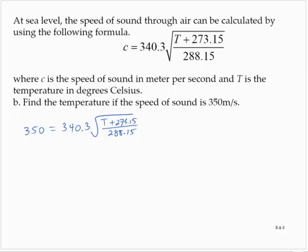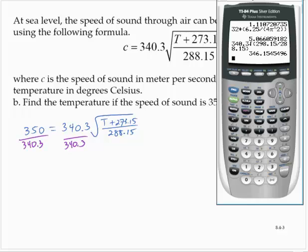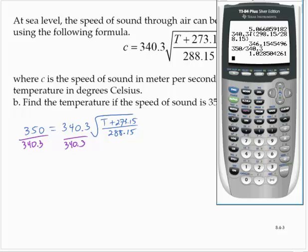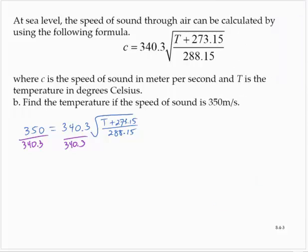First, to solve this equation for T, we need to isolate the square root, so we divide by 340.3. So 350 divided by 340.3 — you don't want to round too much at this point — gives us 1.0285, which equals the square root of (T plus 273.15) over 288.15.